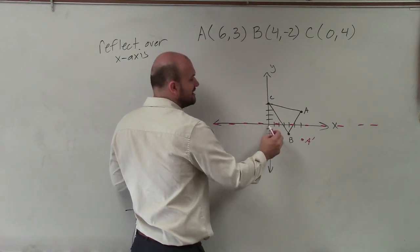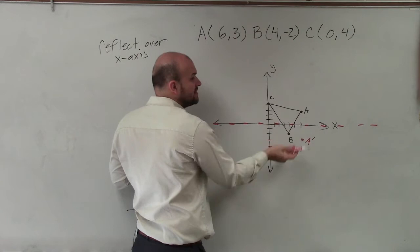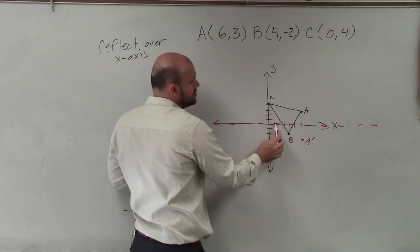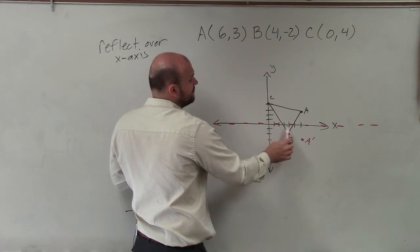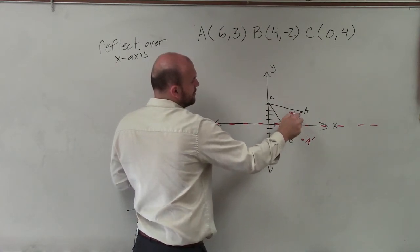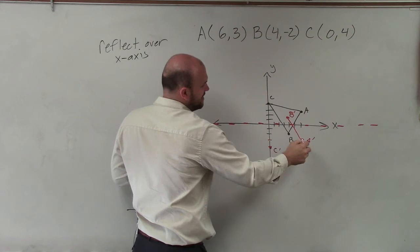And then for B, on B, I went down, right? So therefore, the reflection is going to be up. So down 2 is now going to be up 2.